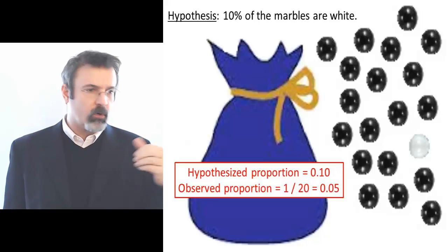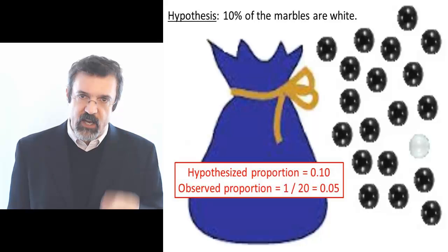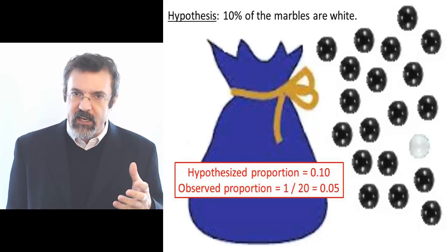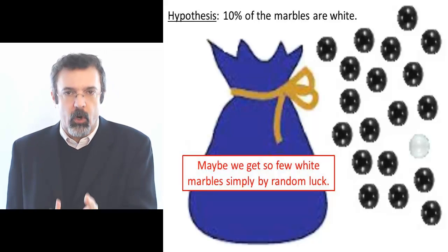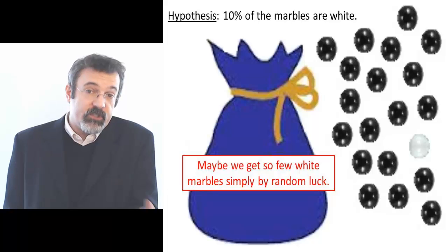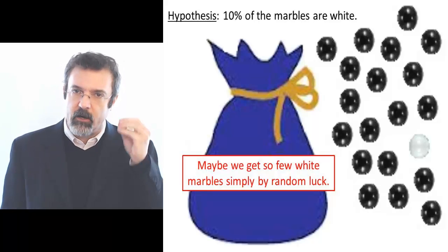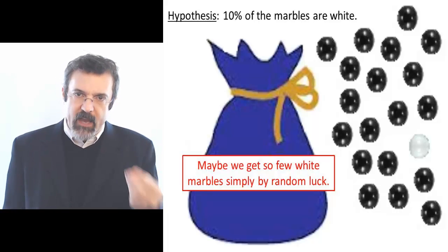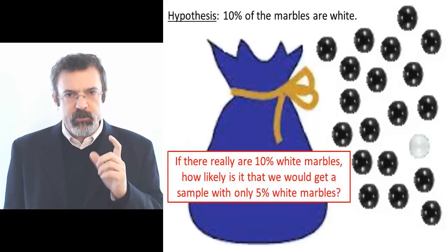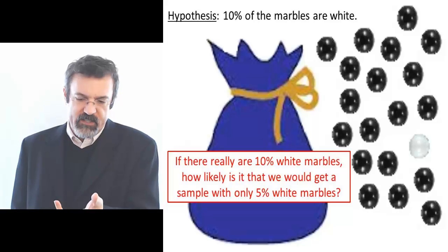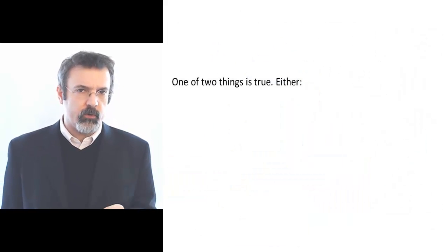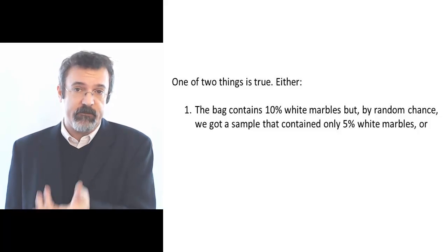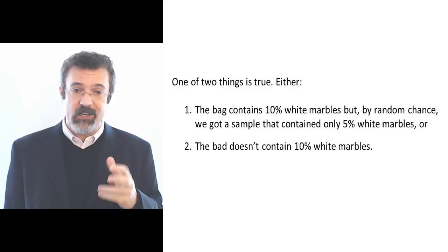The question now is: does this sample refute or fail to refute our assumption? We assumed that 10% of the marbles in the bag are white. While we found 5% white marbles in our sample, we understand that by random chance it's possible that we might draw a sample of 5% white marbles when in fact there are 10% white marbles in the bag. We don't expect our sample to show exactly 10% white marbles. So we compare this sample to the measure we hypothesized and ask: if our assumption is correct, how likely is it that we would have drawn a sample that looks like this? One of two things is true: either the bag really does contain 10% white marbles and by random chance we drew a sample with 5%, or the bag really doesn't contain 10% white marbles.